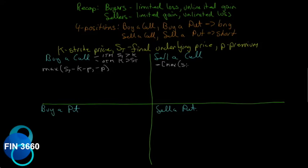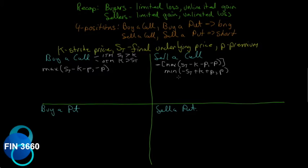Selling a call is simply the negative of that whole expression: negative max(S_t − K − P, −P). Bringing the negative sign through, negative max becomes min, giving us min(−S_t + K + P, P). Notice that buying a call ends with a choice of negative P, whereas selling a call ends with a choice of positive P — we'll see how this works in an example shortly.